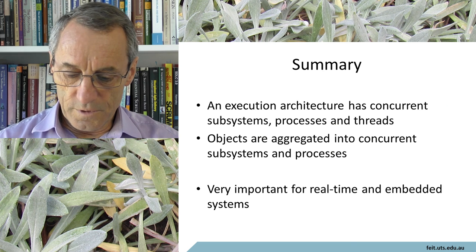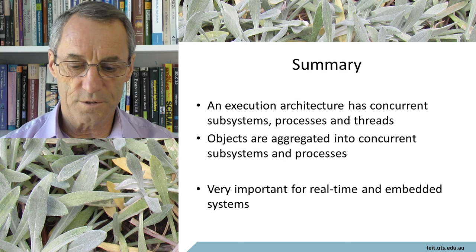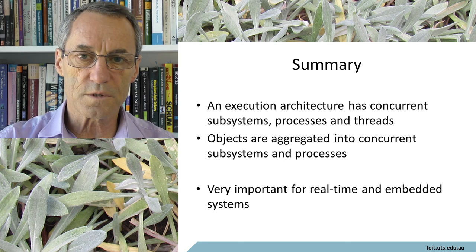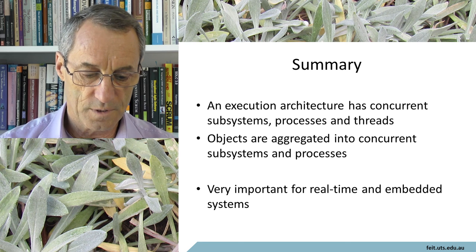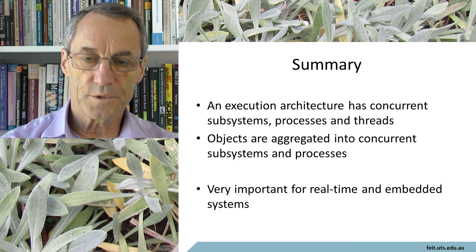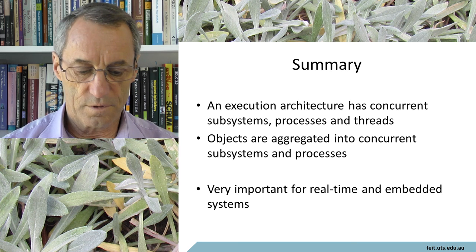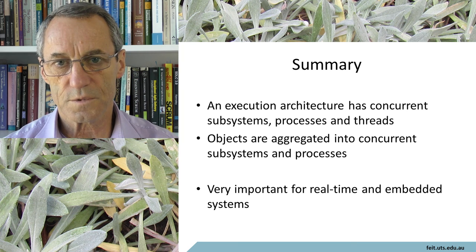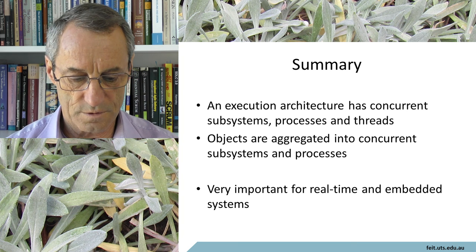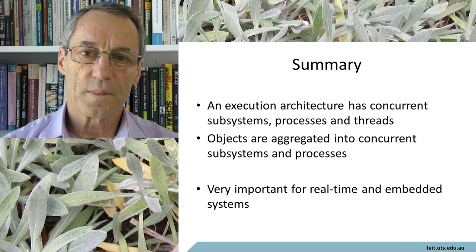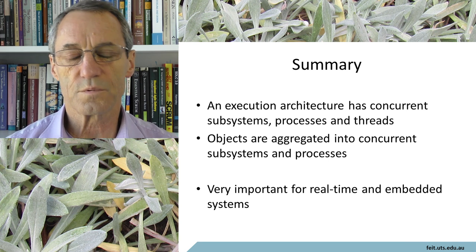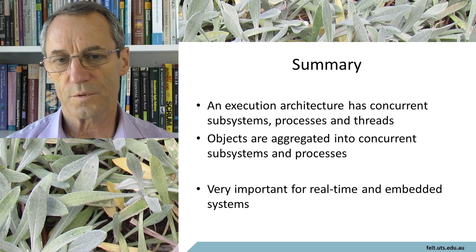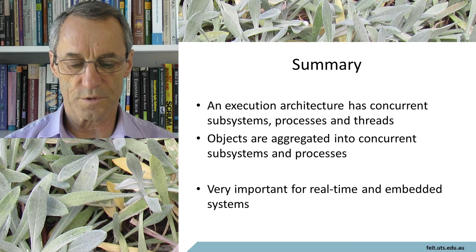As a summary: an execution architecture has concurrent subsystems, processes, and threads. Objects are aggregated into concurrent subsystems and processes. This distinction is very important for real-time systems, but probably not so important for commercial systems.